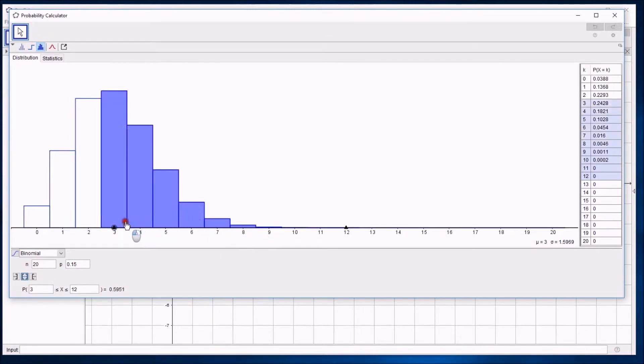You can see I can drag these points around, and I can color in the bits I care about. So now it's telling me the probability of getting between 3 and 5 inclusively is represented by these blue things. It's nice to see it, but it gives me the calculation straight away, 0.5278.